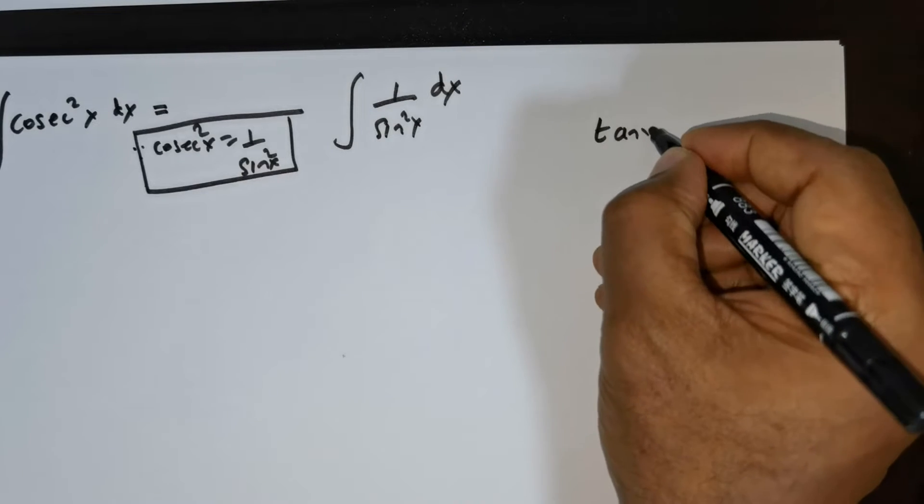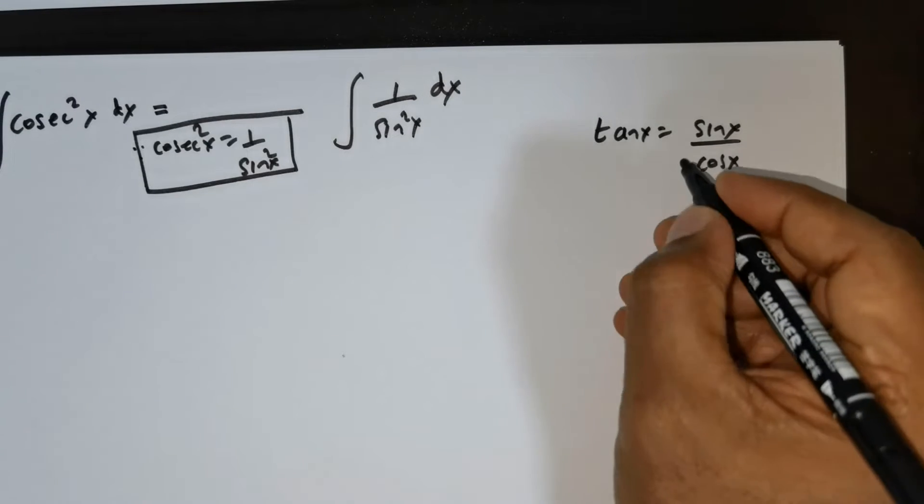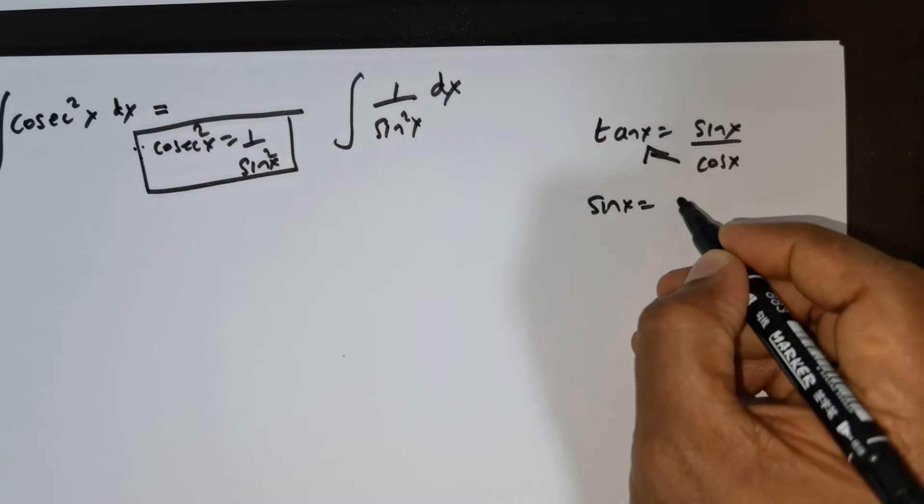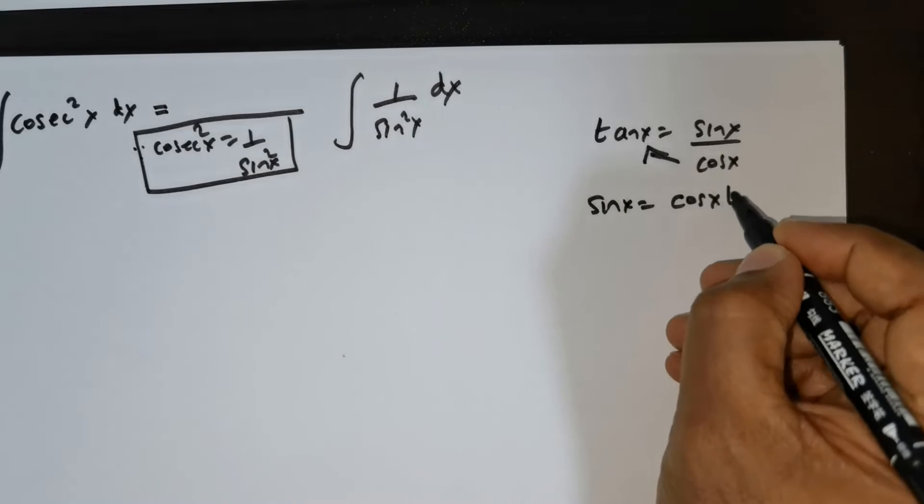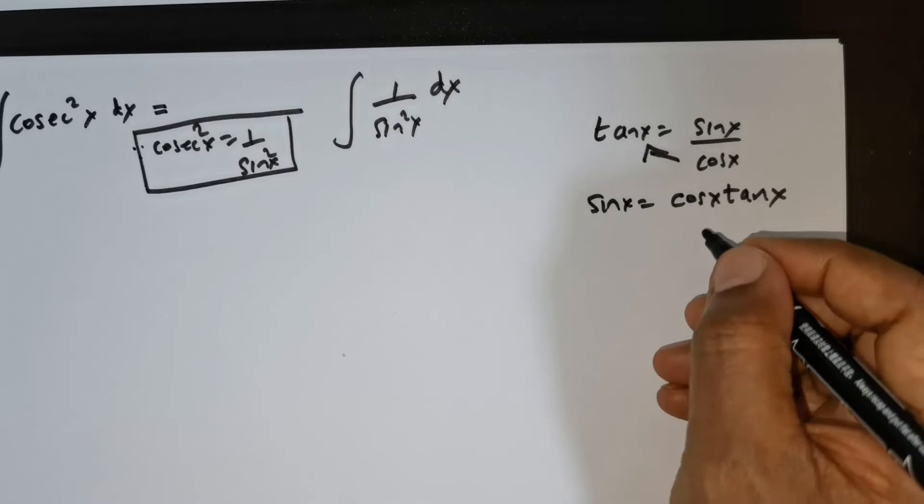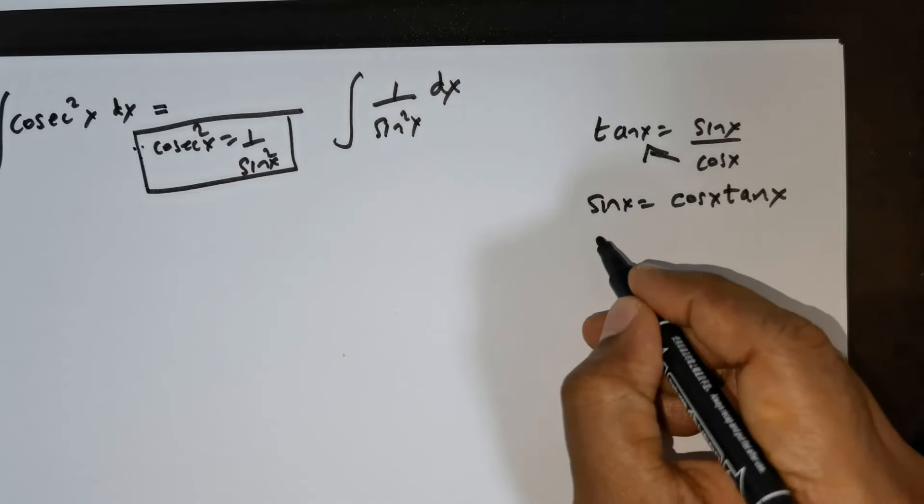tan x is written as sine x divided by cos x. So if I were to cross multiply, I get sine x is equal to cos x times tan x. Now I need sine squared x.